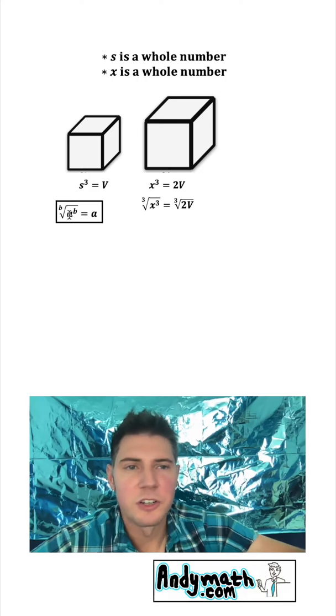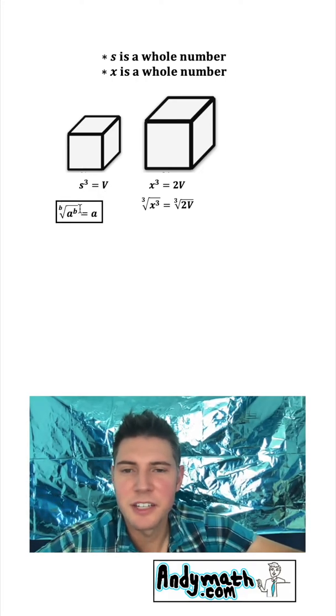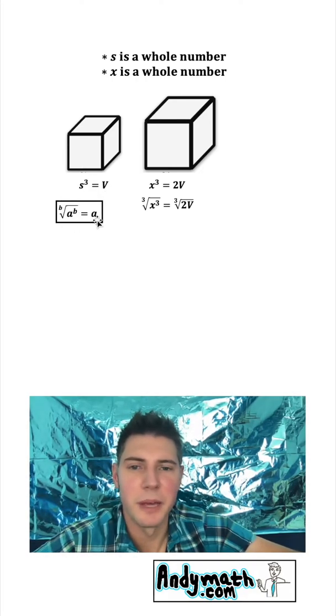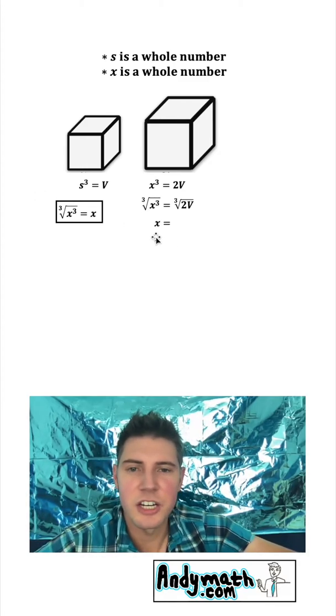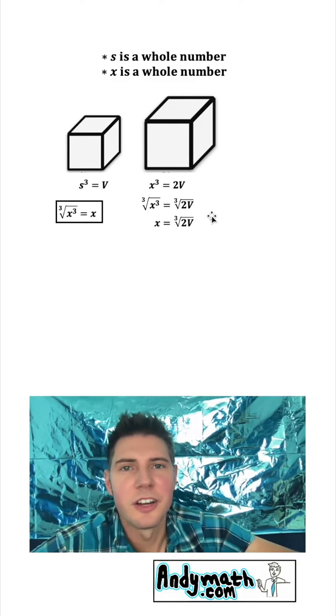Let's do some stuff to this right-hand side. Let's take the cube root of both sides. There's a property that says if the root index is equal to the exponent, then you just have the base. We can change the b into a 3 and the a into an x. And you can see here that this just changes into x. And then we'll bring down this other stuff.